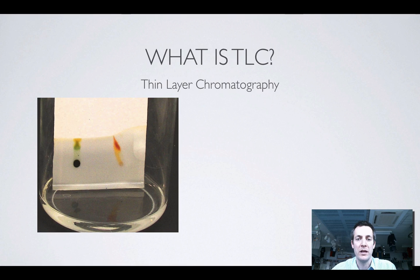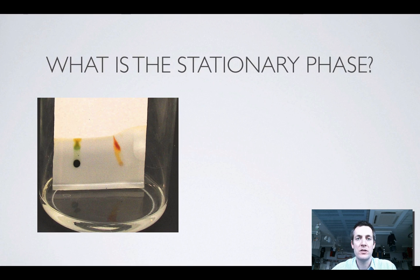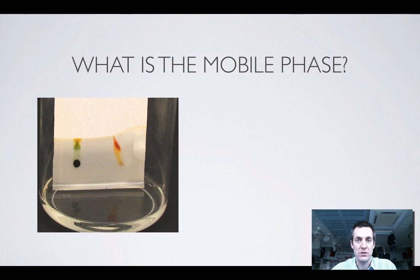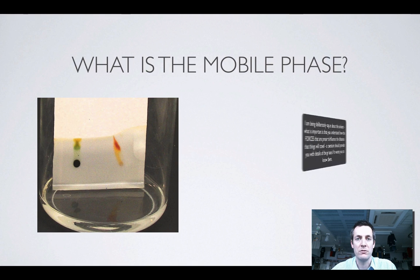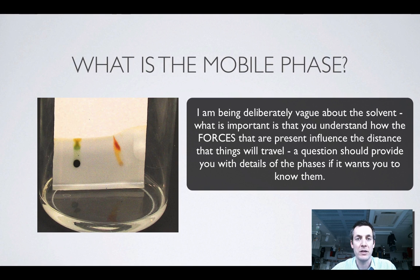That's what the thin layer is. The stationary phase is the phase that doesn't move — the thing that stays still — and so that layer we've just spoken about is the stationary phase in TLC. This is very similar to paper chromatography: you dip your thin layer into the solvent, the solvent rises up and takes part of the mixture with it. So the solvent here is the mobile phase.